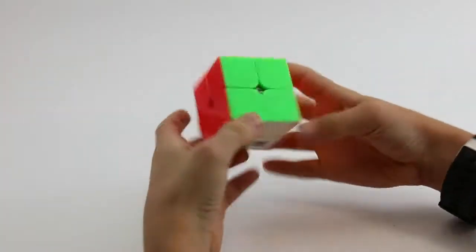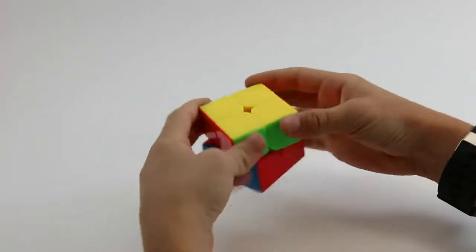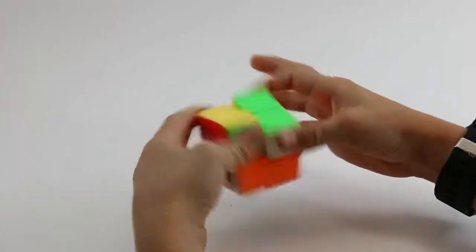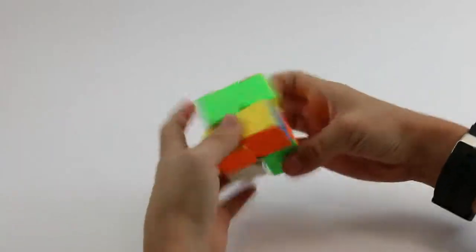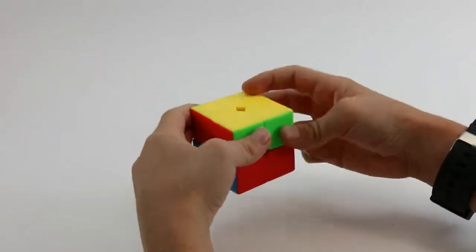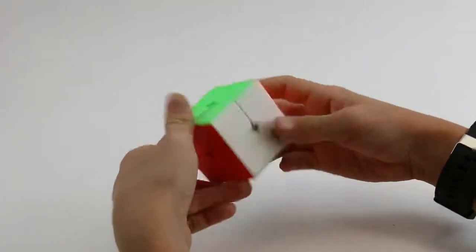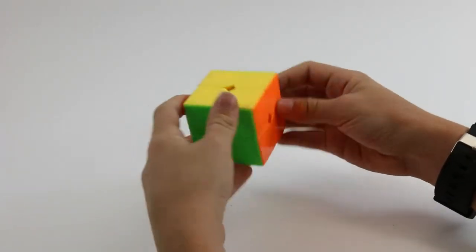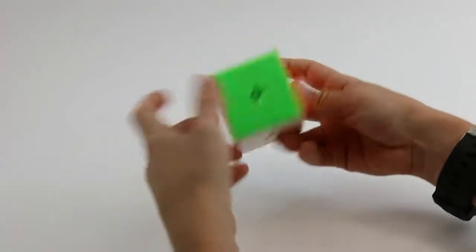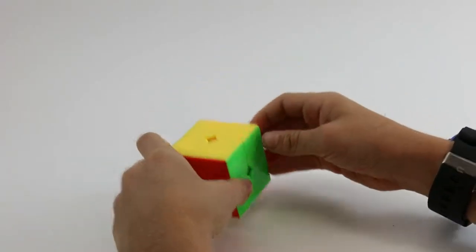So first up is 2x2. I really like the 2x2 because it kind of feels like a 3x3 when you're solving it and it can be done very quickly. It's just really nice to solve because it's kind of like a 3x3 that you do in like 10 seconds, so that's what's really nice about it.